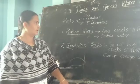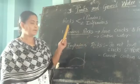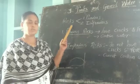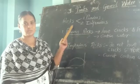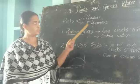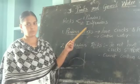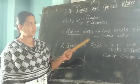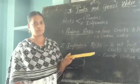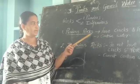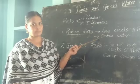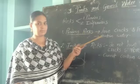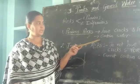In the previous class I also mentioned that we have two types of rocks: pervious rocks and impervious rocks. Pervious rocks are rocks which have cracks and pores — pores means holes — and they can contain water.